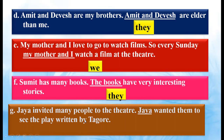Jaya invited many people to the theater. Jaya wanted them to see the play written by Tagore. So here, Jaya is the name of a girl. So are we going to use 'she' or 'her'? Comment below and tell me what we will use. I have written 'her' over there — is it correct? It should be 'she' or 'her'. You have to tell me in the comment section.